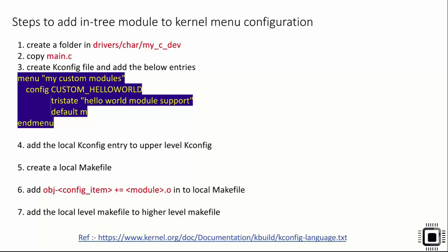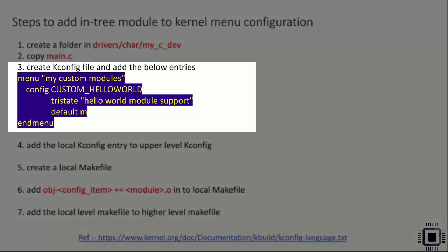To add an in-tree module to kernel menu configuration, first you have to create a folder in the Linux kernel source tree, maybe under the directory drivers/char. Under this path, create a directory called 'my_custom_device' or something like that. After that, create a local kconfig file. A menu entry should start with the keyword 'menu' and end with the keyword 'endmenu'.